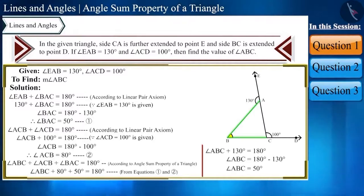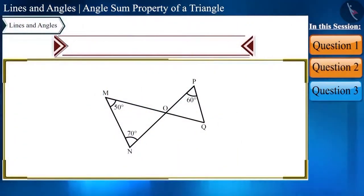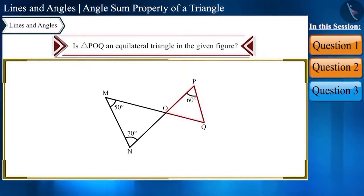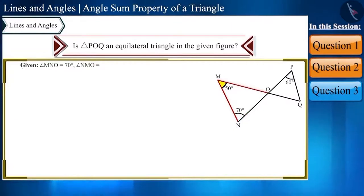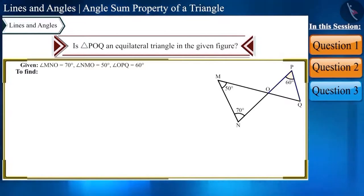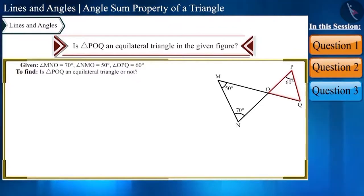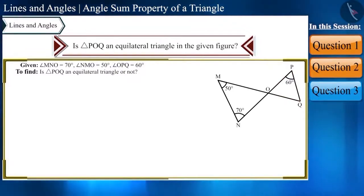Now let's move to the second question: identify whether triangle POQ in the given figure is an equilateral triangle or not. The given values are: angle MNO equals 70 degrees, angle NMO equals 50 degrees, and angle OPQ equals 60 degrees. To find this out, we will find the values of all angles of triangle POQ and see if all angles are 60 degrees.